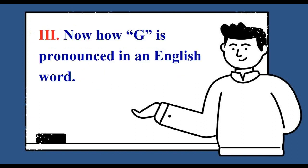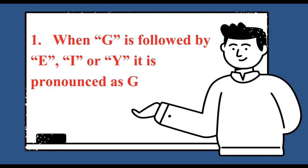Now how G is pronounced in an English word. When G is followed by E, I, or Y, it is pronounced as J.